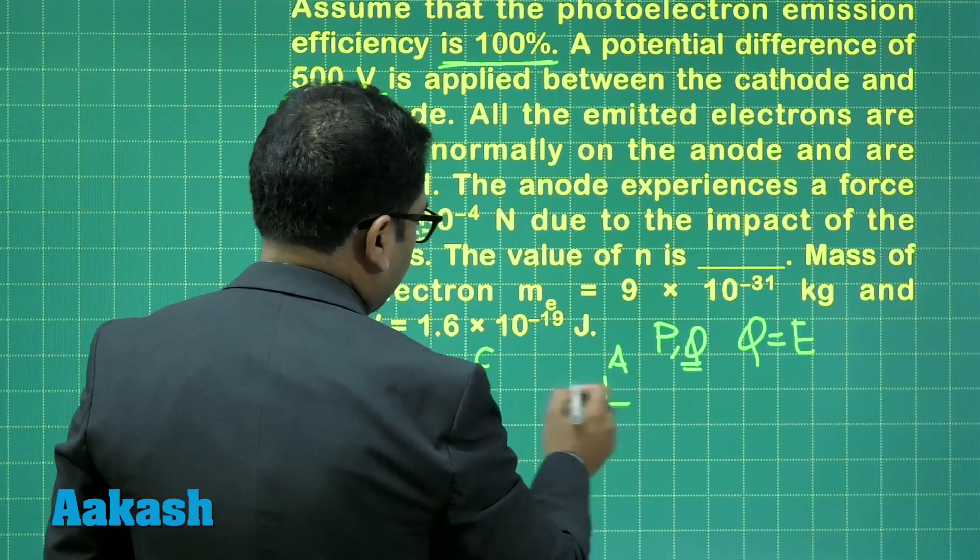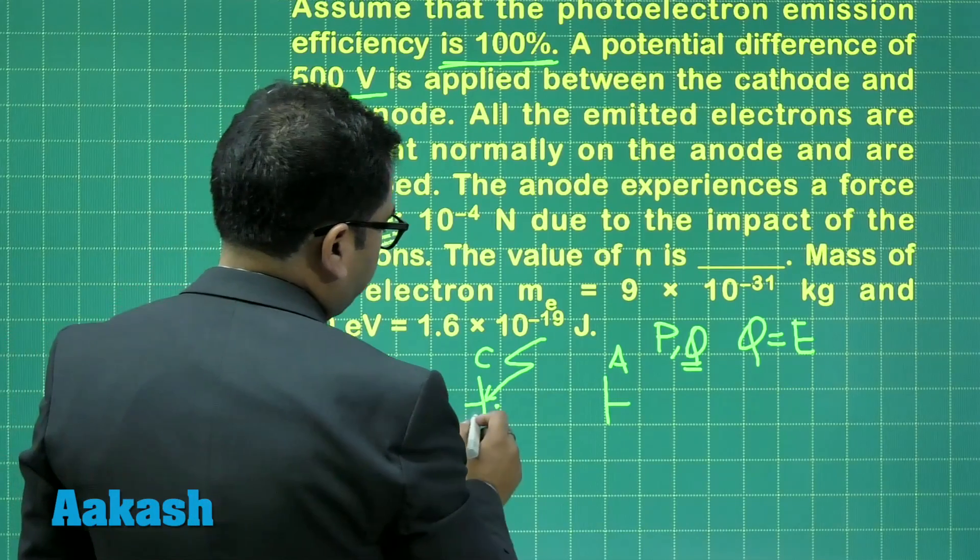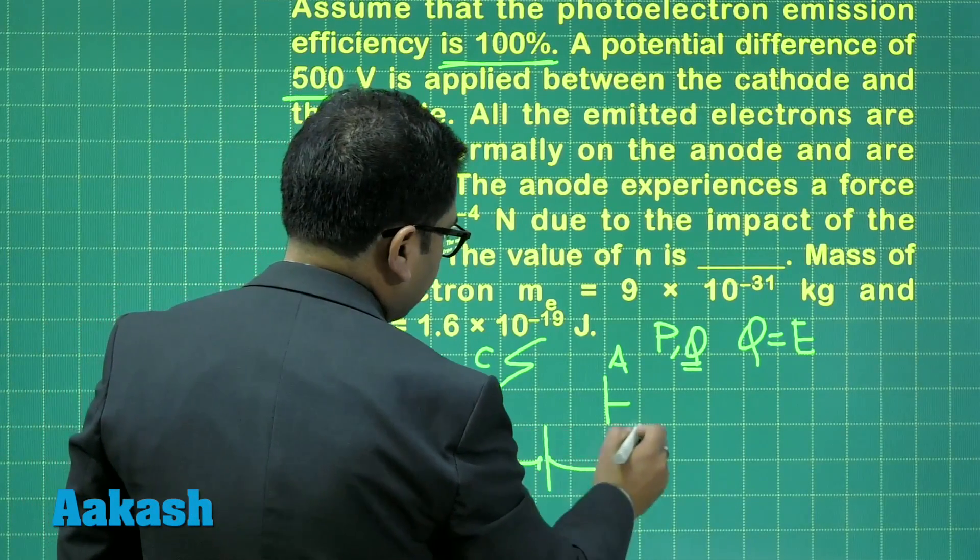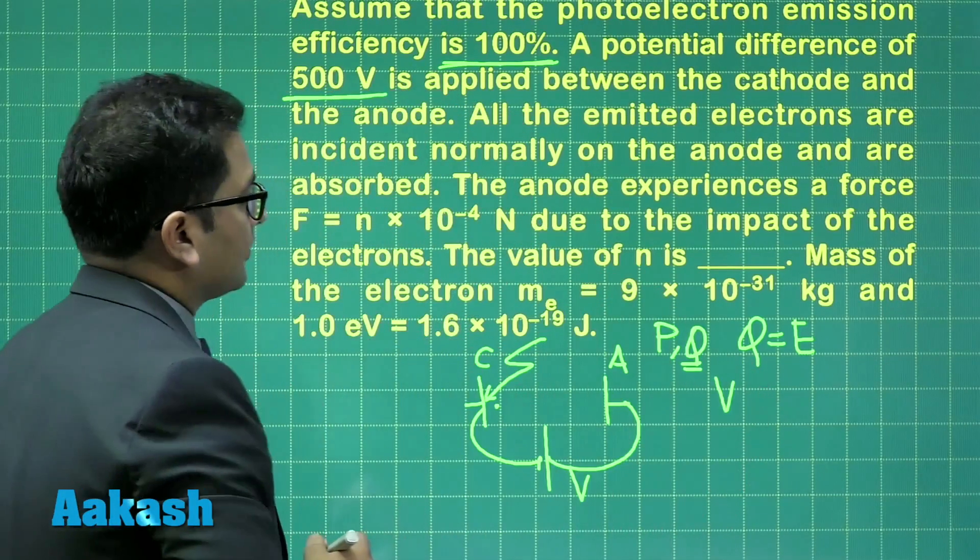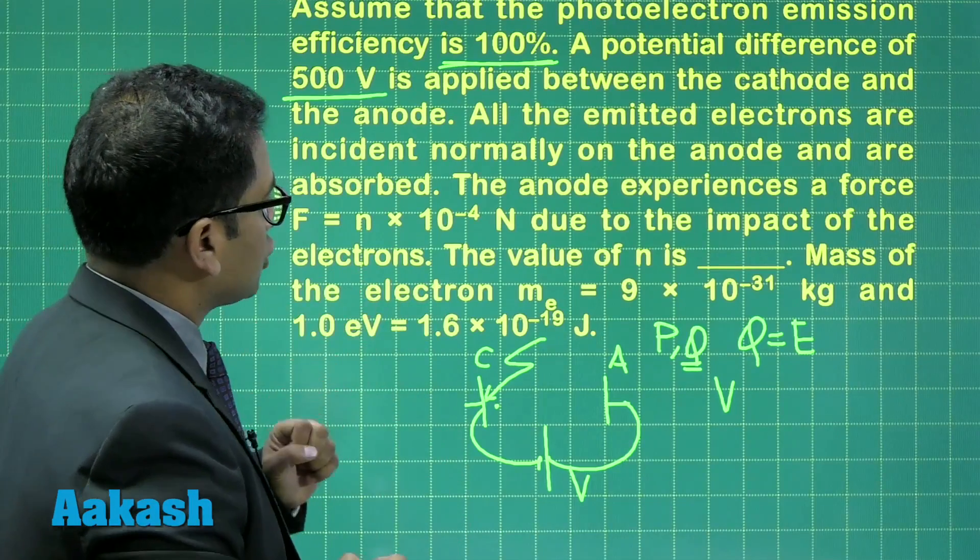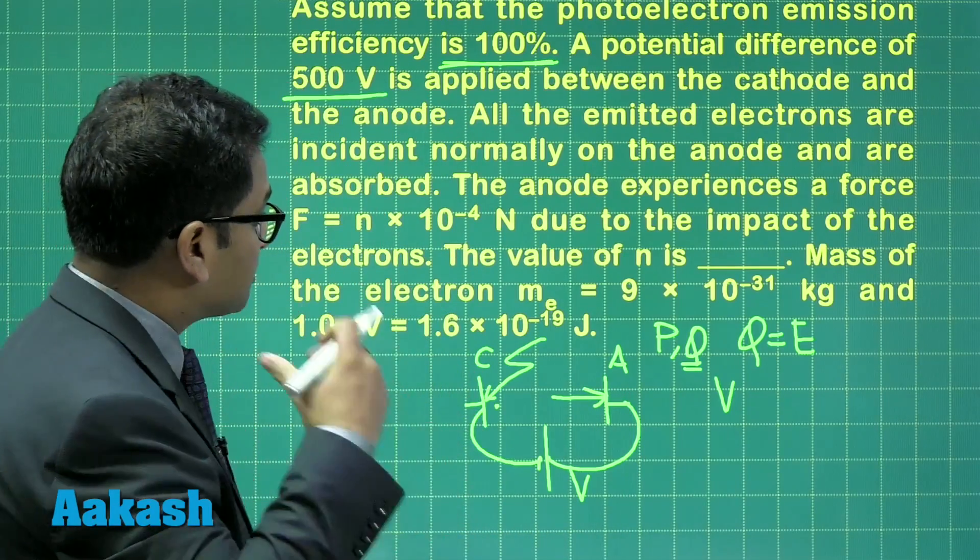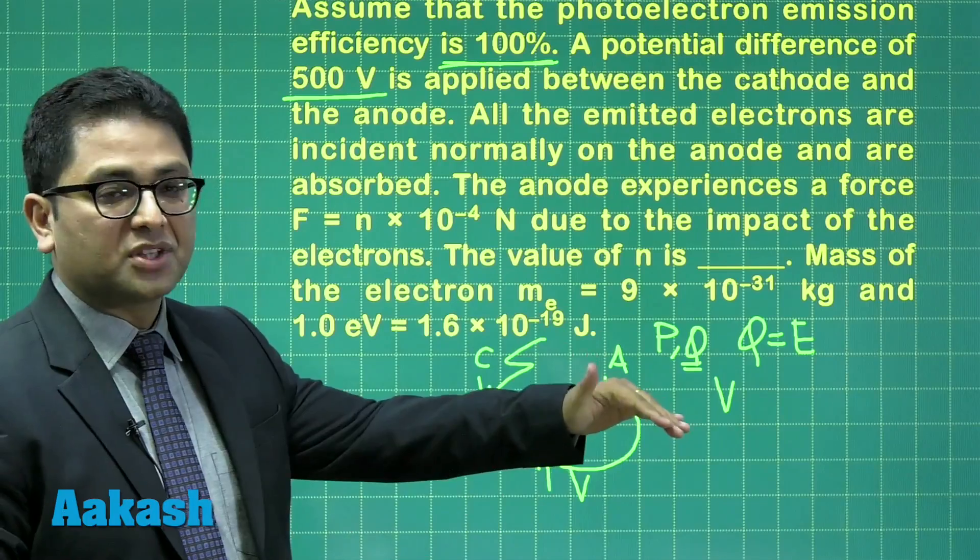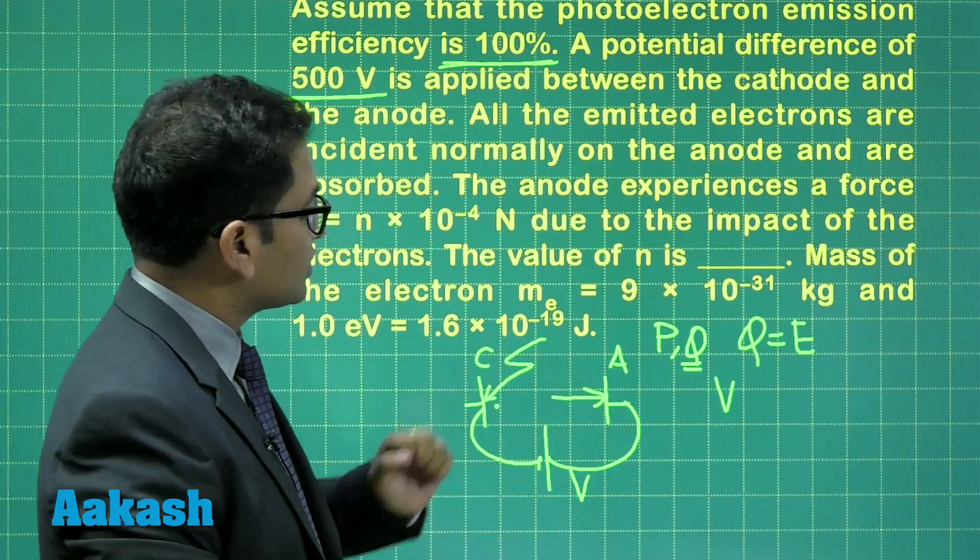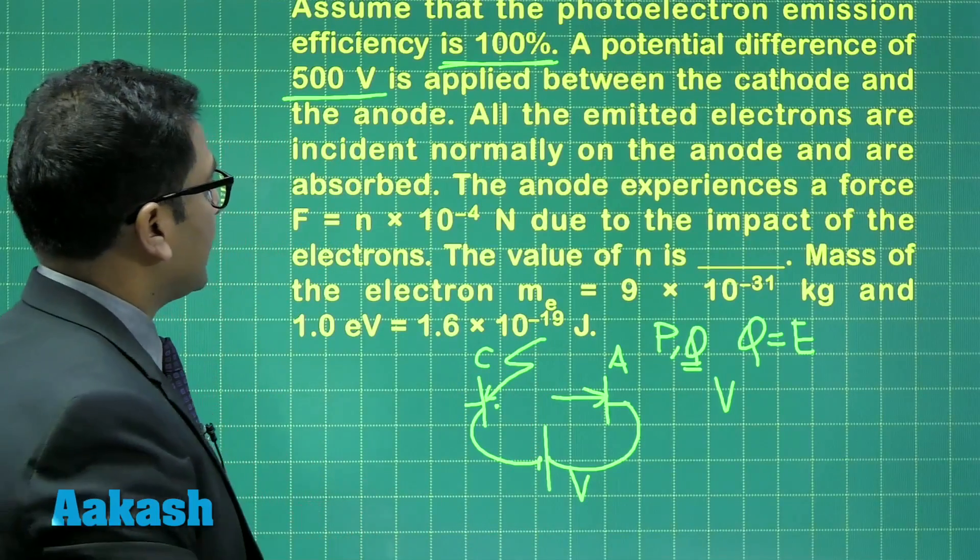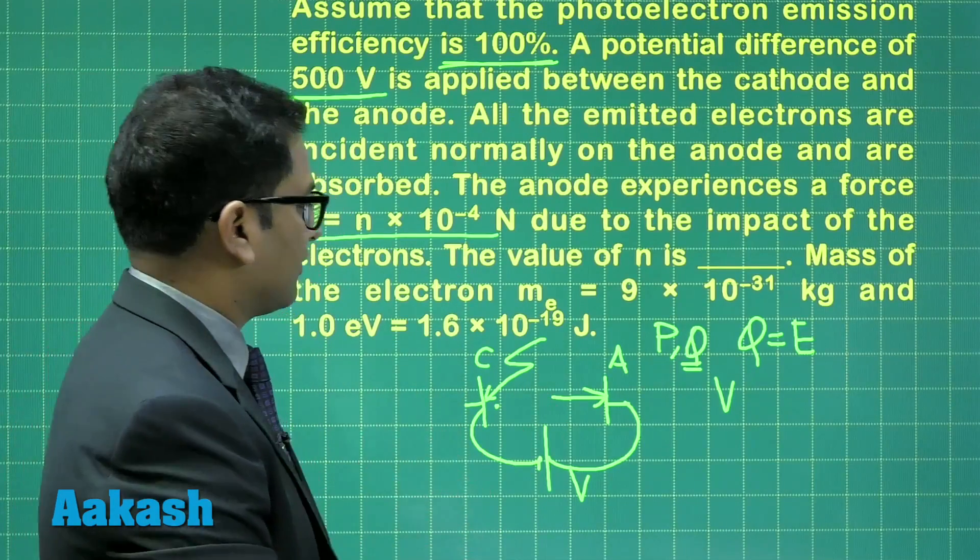if this is the cathode, this is the anode, then electrons would be emitted with negligible kinetic energy, and this is being maintained at 500 volts. In other words, capital V has also been given. All the emitted electrons are incident normally on the anode. Another assumption, series of assumptions are there, and are absorbed. That means they are not reflected, they are absorbed. The change in momentum would be p minus 0, where p is the momentum which comes just before striking the anode. The anode experiences a force of this much Newton, and we need to calculate the value of n.